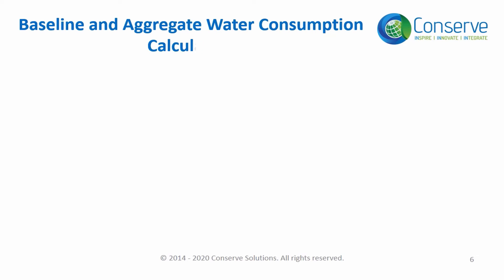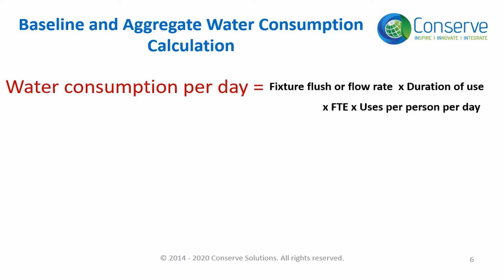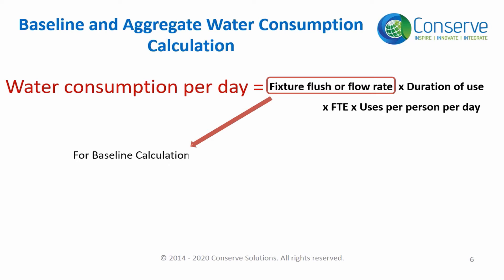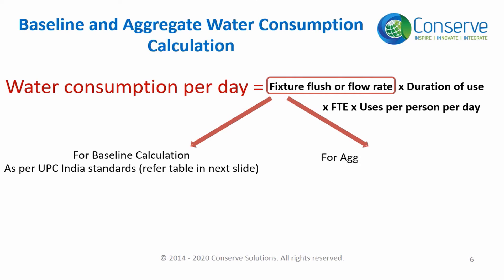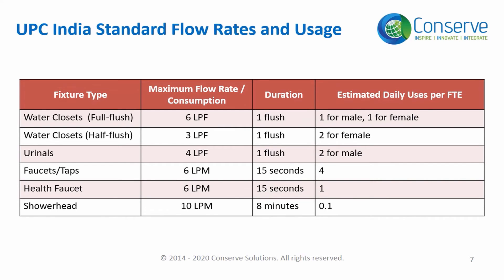Water consumption can be calculated based on flow rate or flush rate, duration of use, FTE (full time equivalent), and usage per person per day. For baseline calculation, the flow rate or flush rate shall be as per the standard data sheet of plumbing fixtures, that is Uniform Plumbing Code India. Actual aggregate water consumption calculation is as per the data sheet of plumbing fixtures used in the project. The values of this table should be used for baseline flow rate or flush rate, duration of use, and usage per person per day.